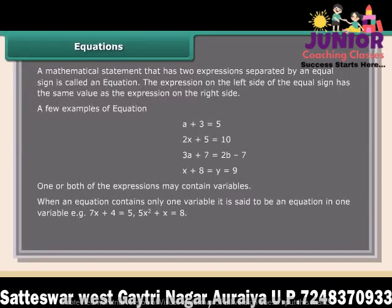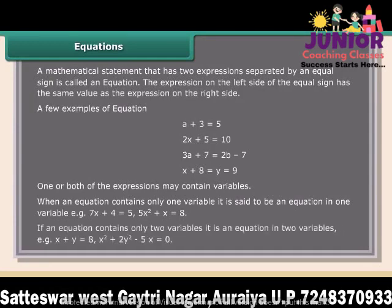For example, 7x plus 4 is equal to 5, and 5x squared plus x is equal to 8 are equations in one variable. If an equation contains only two variables, it is an equation in two variables. For example, x plus y is equal to 8, and x squared plus 2y squared minus 5x is equal to 0.